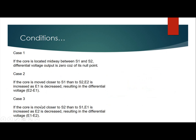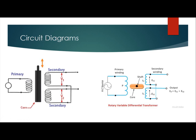In case three, if the core is moved closer to S2 than to S1, E2 is increased as E1 is decreased, resulting in a differential voltage of E2 minus E1. In this case, the moving core is near the second secondary coil, so the voltage of S2 is more than the voltage of S1, and the result will be E2 minus E1.